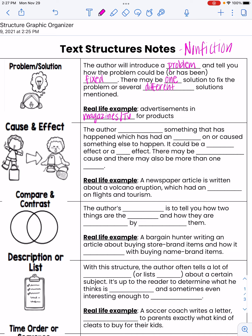The next text structure is cause and effect. This can sound really similar to problem and solution, but there is a big difference. The author is going to describe something that has happened, which has had an effect on or caused something else to happen. It could be a good effect or a bad effect. There may be more than one cause and more than one effect.